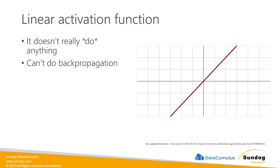The simplest activation function is called the linear activation function, and all this does is output whatever it got as an input — it's just a straight line. The problem is that it doesn't really do anything; it's just mirroring what came in. It can't do any interesting learning or backpropagation, and because it just outputs whatever it got as an input, there's really no point to having multiple layers at all. Linear activation functions actually aren't very useful — you don't really see these in action very much at all.